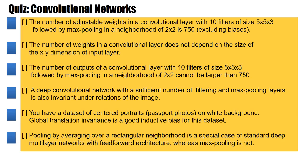First point: the number of adjustable weights in a convolutional layer with 10 filters of size 5×5×3, followed by max pooling in a neighborhood of 2×2, is 750 — and I don't count the biases. Do you think that this is correct?